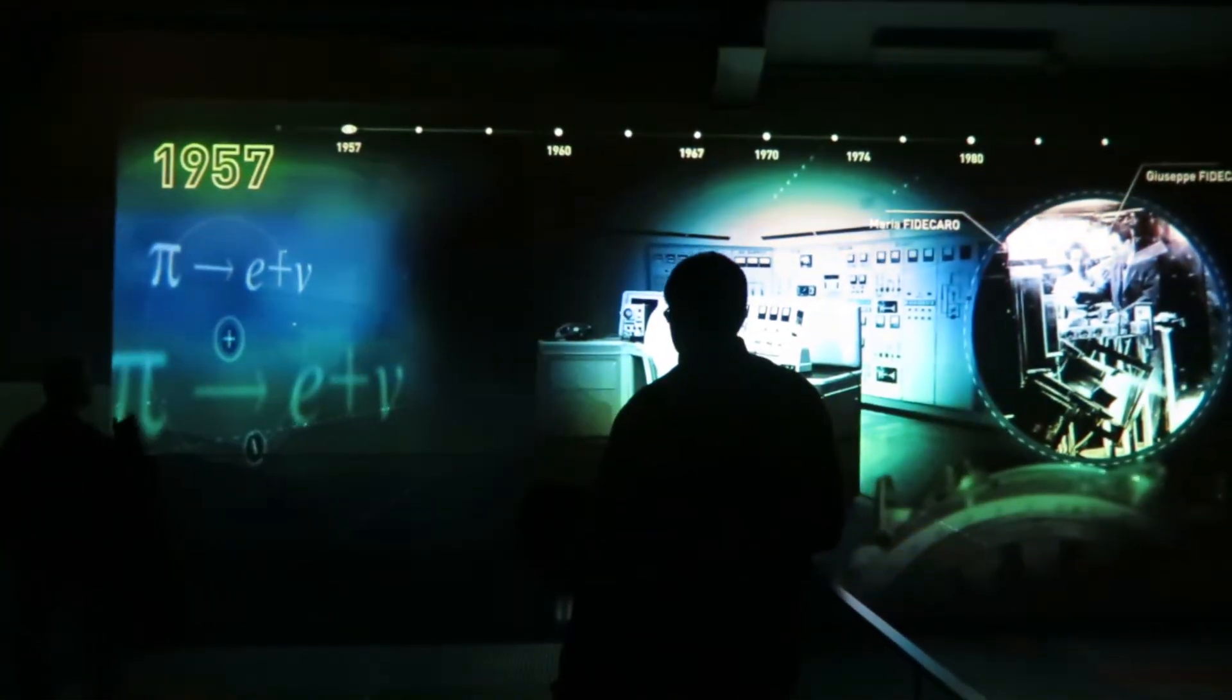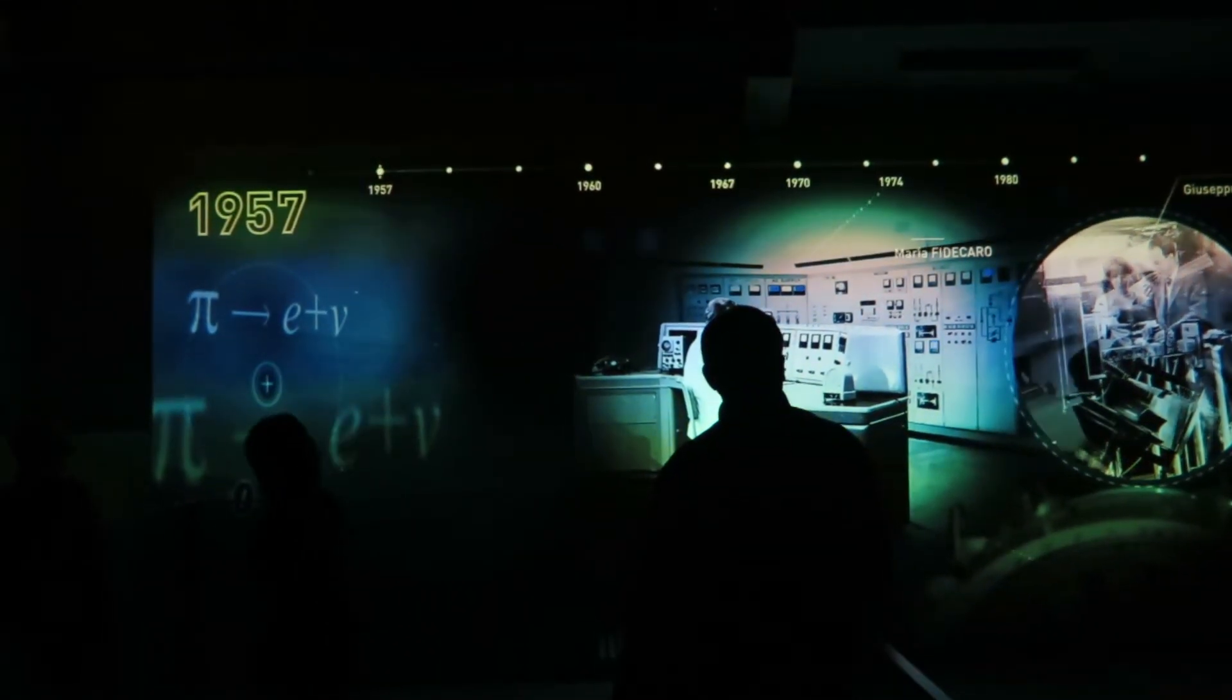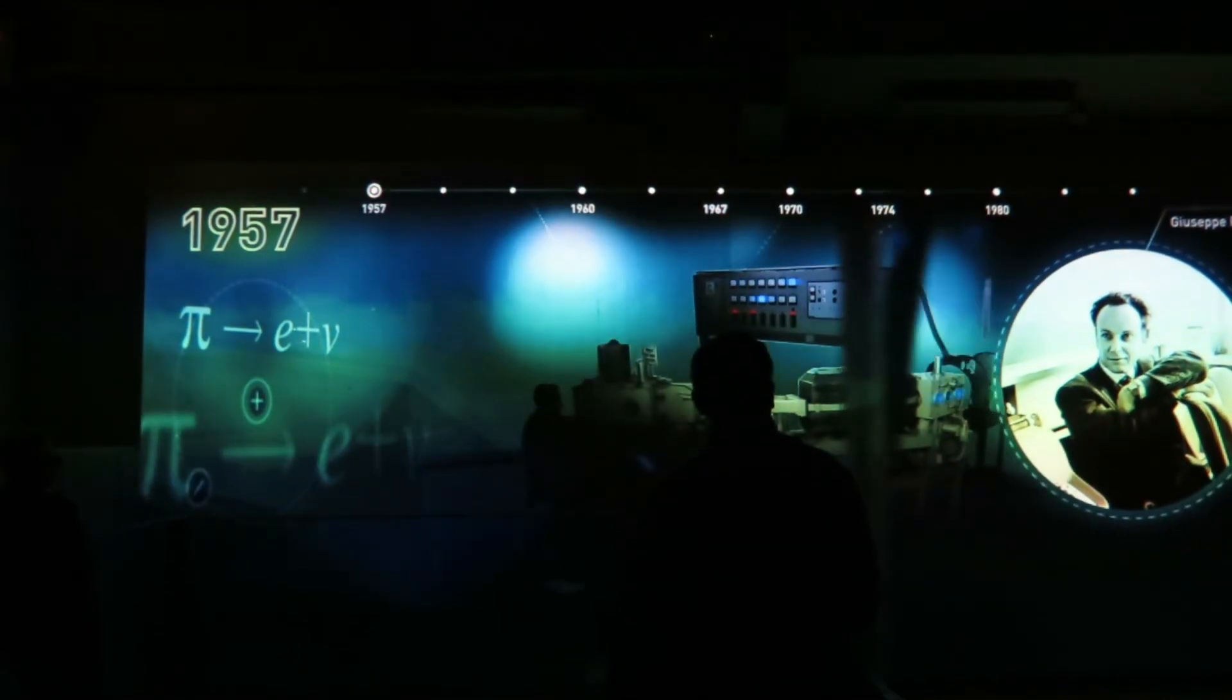In 1957, young scientists from all over Europe arrived. Among them are Maria and Giuseppe Finnegan. Giuseppe wants to study a short-lived particle called the pion.